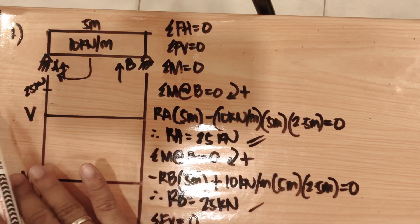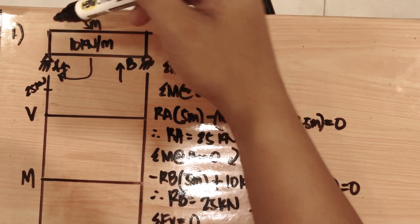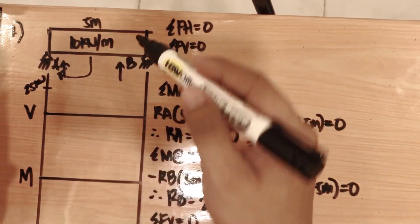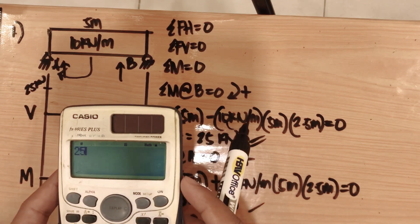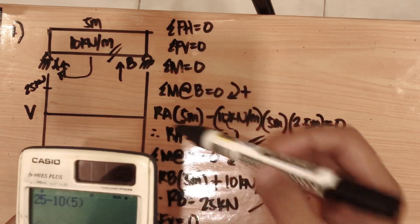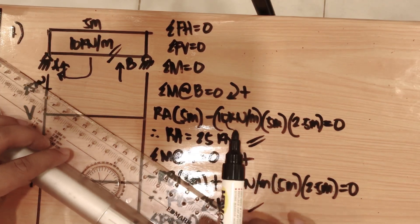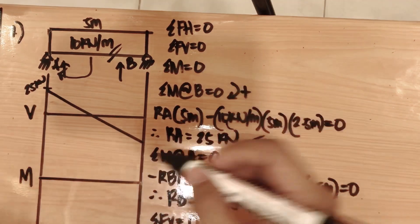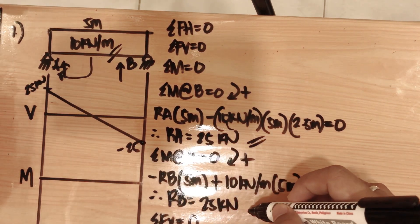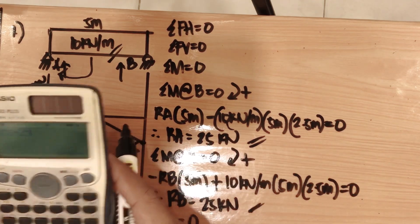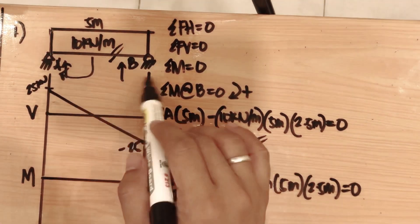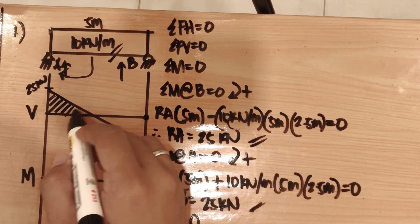Starting from left to right and including the distributed load of 10 kilonewton per meter, the shear at point B is 25 minus 10 times 5, which equals negative 25 kilonewtons. Then with the support reaction at B of 25 kilonewtons, negative 25 plus 25 equals zero. The shear diagram returns to zero at the supports, which is correct for a beam with supports on both sides.